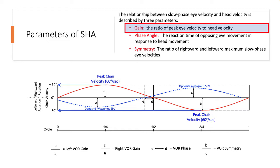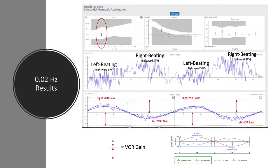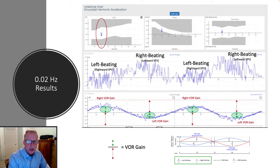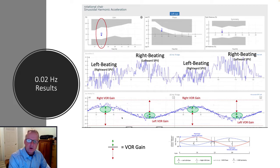Gain is seen as a comparison of the right VOR components and the left VOR components in relation to the velocity of the chair movement. We're really just looking at what is the intensity of the VOR in relation to the intensity of the chair.